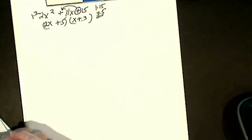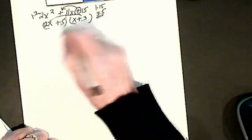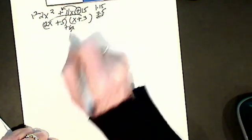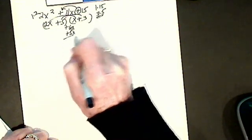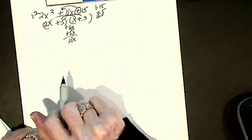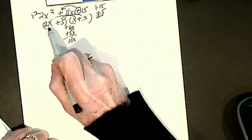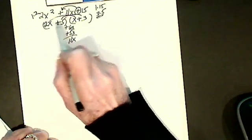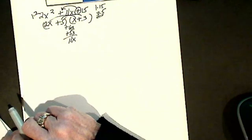I have to check every single time to see if I get that 11x by foil. If I check my outers, I get plus 6x. I check my inners, I get plus 5x. I do get 11x. So this one, I got first time. I check after that, I better check my first to make sure. 2x times x is 2x squared, plus 5 times plus 3 is plus 15, so it foils back correctly.